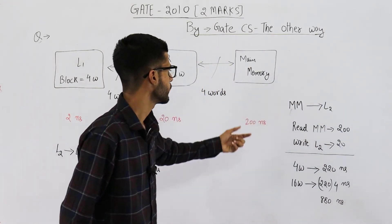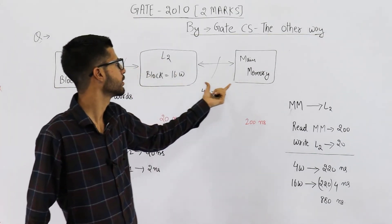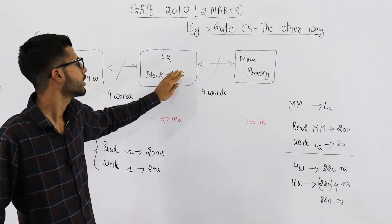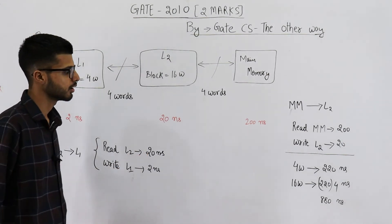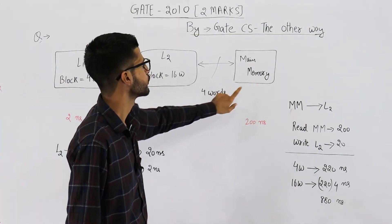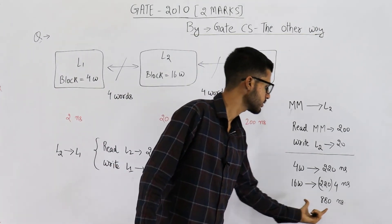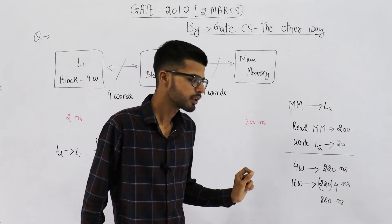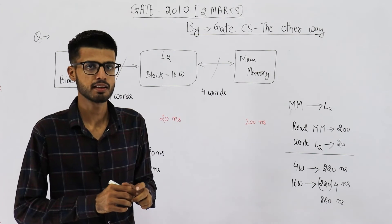That gives us 880 nanoseconds. By spending 880 nanoseconds, we transferred 1 block of 16 words into L2. Now, a 4-word block will be transferred to L1, which takes 22 nanoseconds. So the total time for transferring a block from main memory to L2, then from L2 to L1, will be 880 nanoseconds plus 22 nanoseconds — giving 902 nanoseconds. The answer to the second part is 902 nanoseconds.